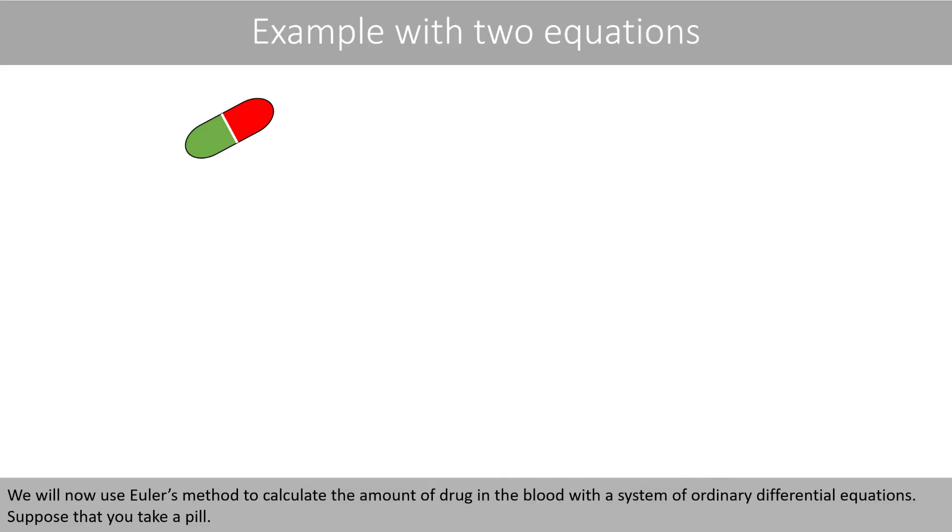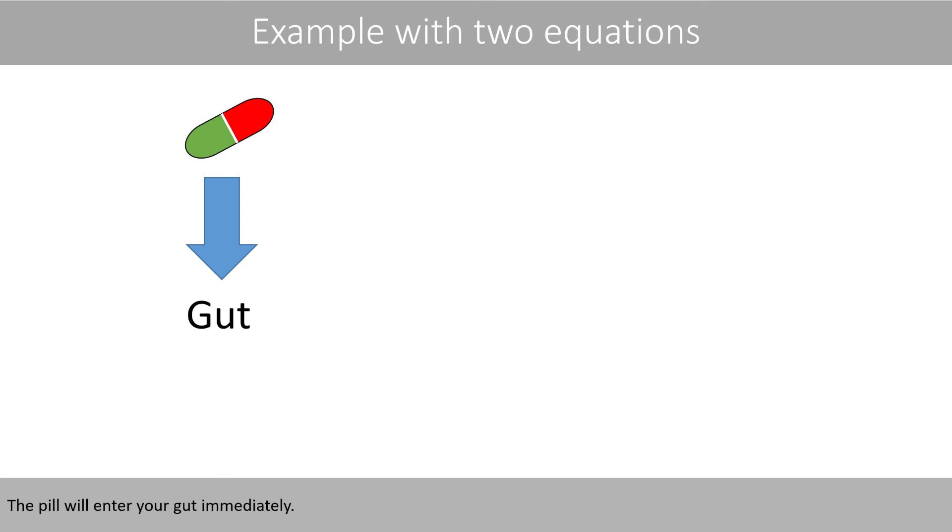We will now use Euler's method to calculate the amount of drug in the blood with a system of ordinary differential equations. Suppose that you take a pill. The pill will enter your gut immediately. Then it will be absorbed into the blood. And once it enters the blood, it will be effective. The drug molecules would then be eliminated over time in the blood and eventually leave the body.